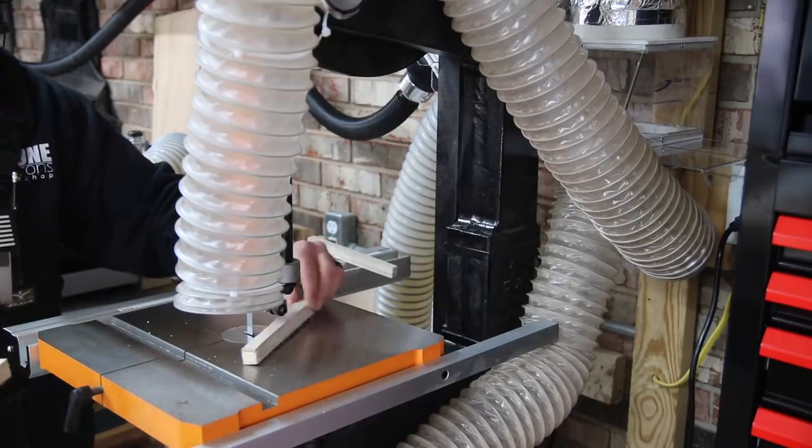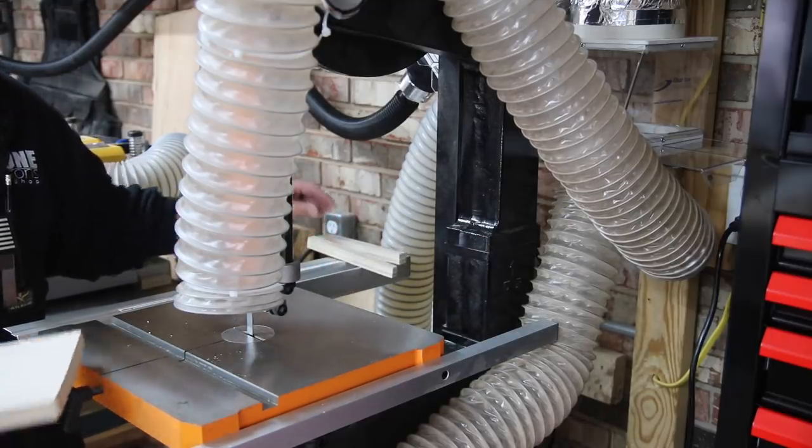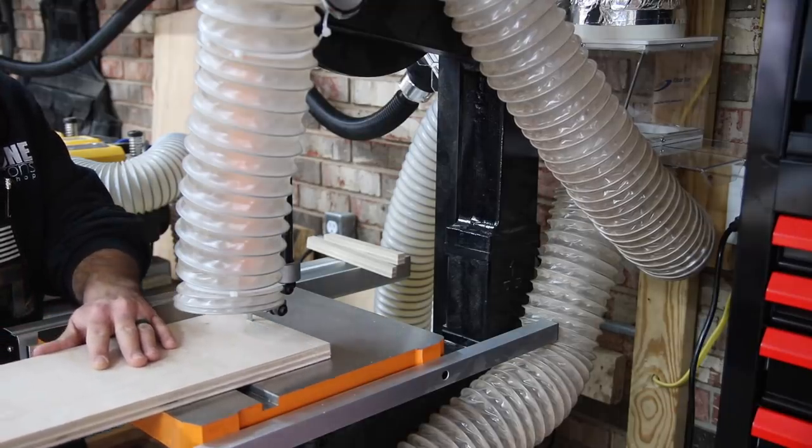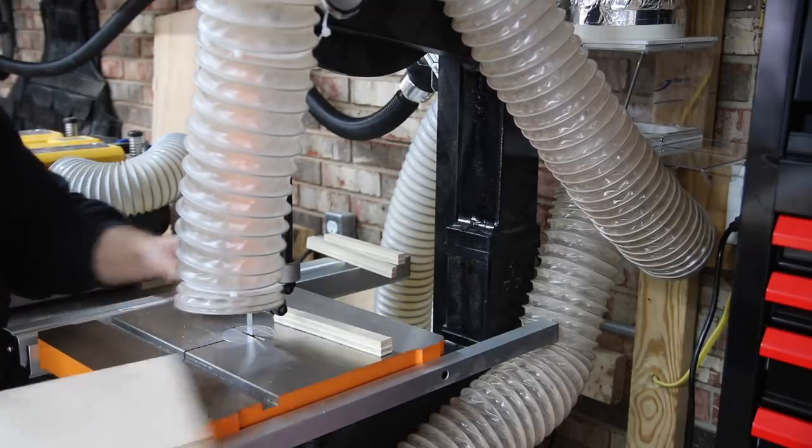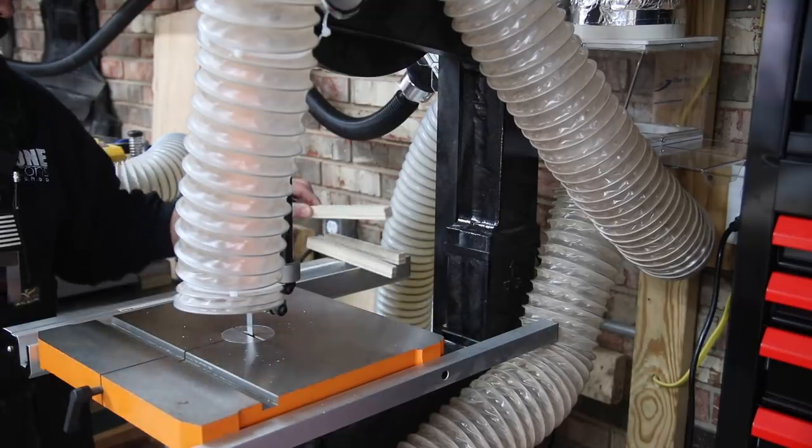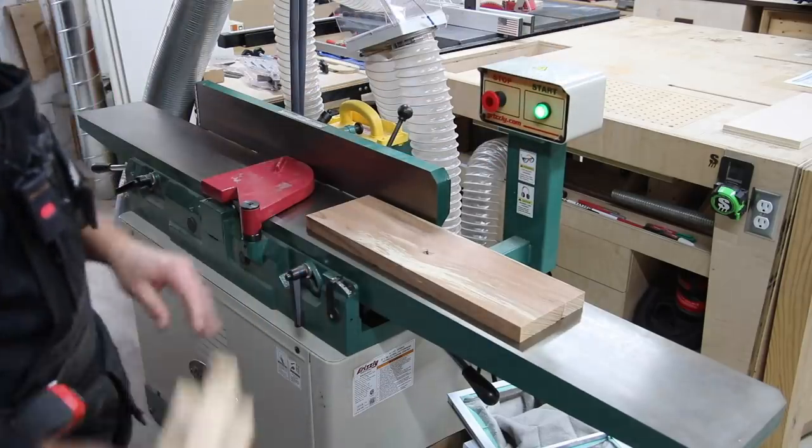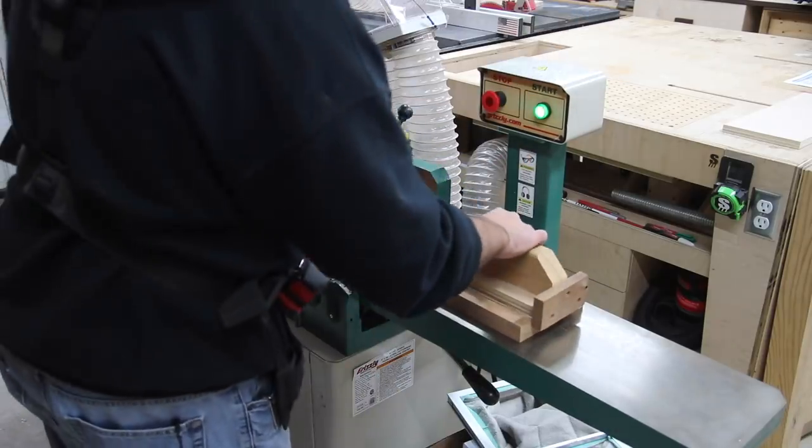And then the other hose is going to the top of the table, and it's just following the blade down. I've got it tie-wrapped so when I adjust the height of clearance that I need, that hose will adjust with it. And as you can see, there's a little bit on the table there, but not anything like it was. So I'm very happy with that.